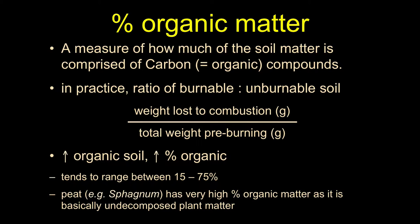The greater the percentage of carbon, the more organic we say the soil is. Most terrestrial soils tend to fall between about 15 and 75%. The extreme would be sphagnum moss — also known as peat — which has really, really high organic content. That soil is basically just dead moss.